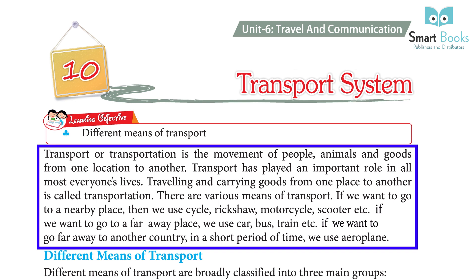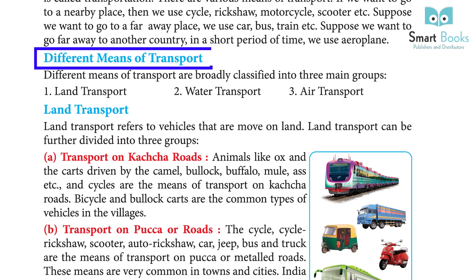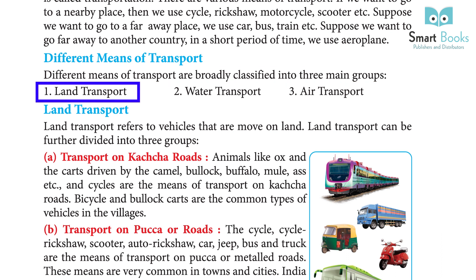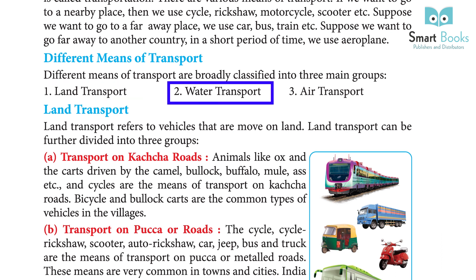There are various means of transport. If we want to go to a nearby place, we use a cycle, rickshaw, or motorcycle. If we want to go to a faraway place, we use a car, bus, or train. If we want to go to another country in a short period of time, we use an aeroplane. Different means of transport are broadly classified into three main groups: one — land transport, two — water transport, three — air transport.